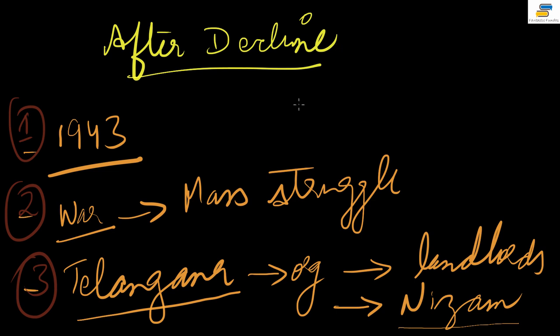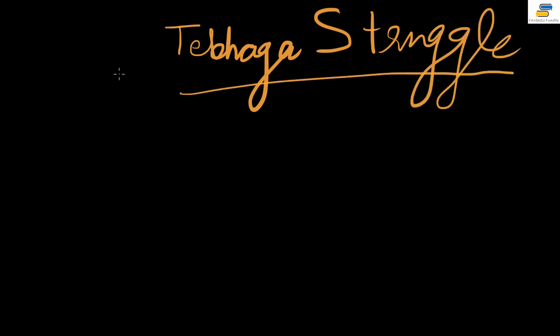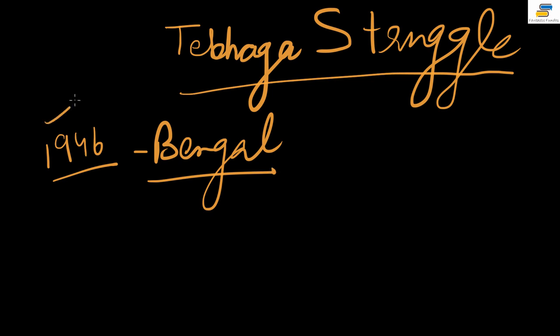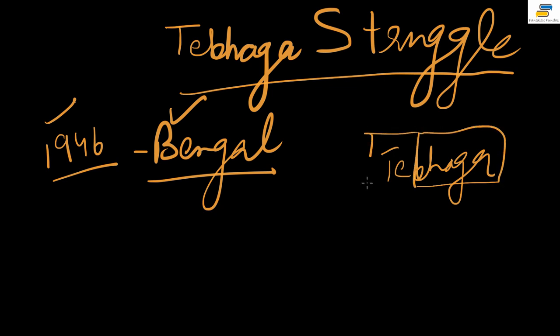Next is the Tebhaga Struggle — very important for your exam as UPSC likes to ask about it. This happened in Bengal in late 1946. 'Tebhaga' combines two words: 'bhaag' meaning part, and 'ti' meaning third — so it means one-third. This one-third is central to understanding the movement.